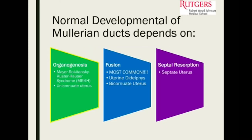If you have Müllerian agenesis or hypoplasia, you may end up with MRKH syndrome, where the uterus doesn't form. If one side forms but the other doesn't, you can have a unicornuate uterus with one horn only on one side. If you have a fusion problem, you can have a uterine didelphys — a double uterus, a double cervix, and a double vagina with a septum in between.